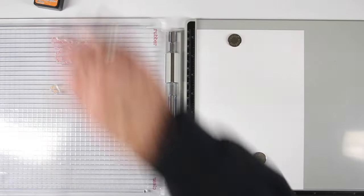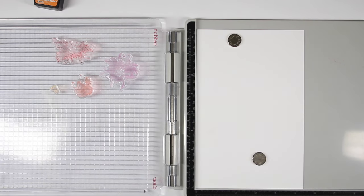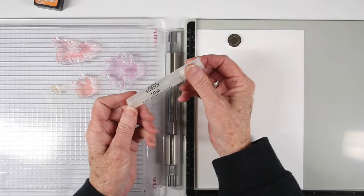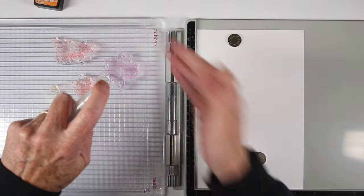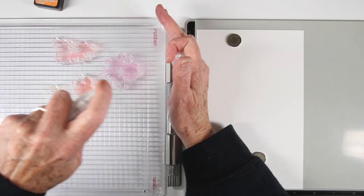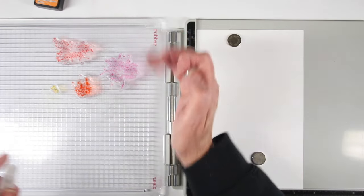So once I have those inked up I like to wipe off any excess ink I might have put down. And then I'm going to use my mini mister that has just plain water in here and I'm going to go ahead and mist the stamps. What I'm looking for is for the ink to ball up onto the stamp and that way I can tell I have enough water.